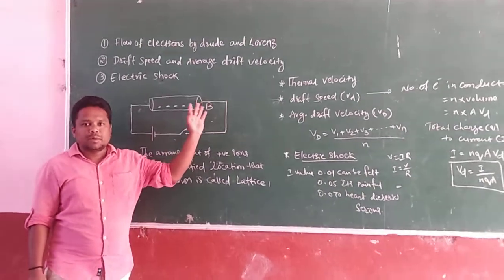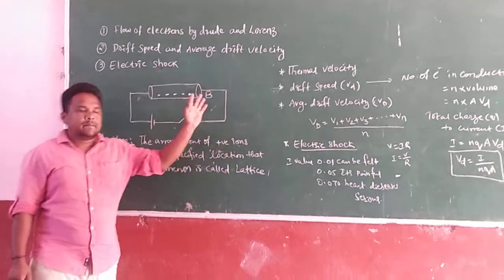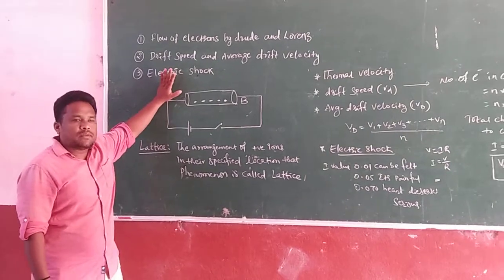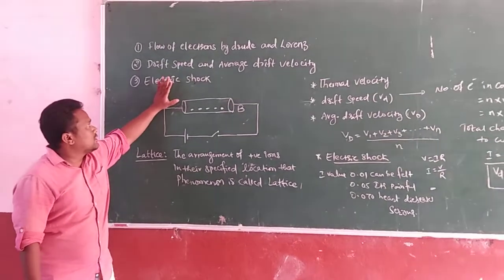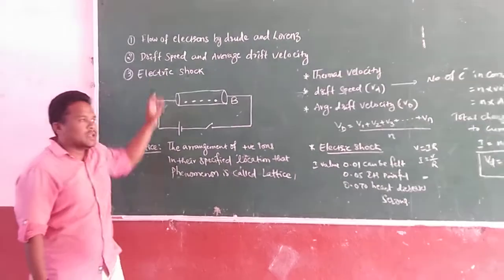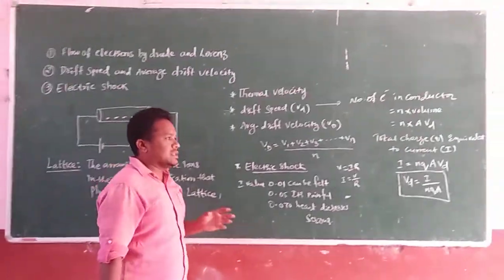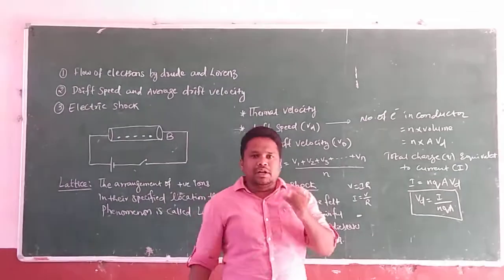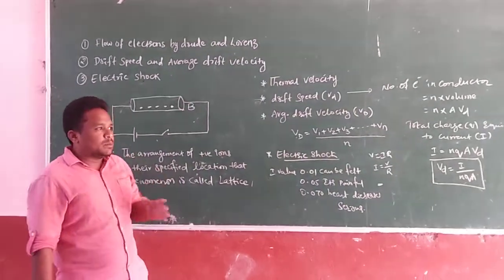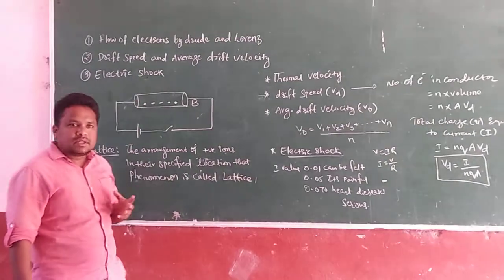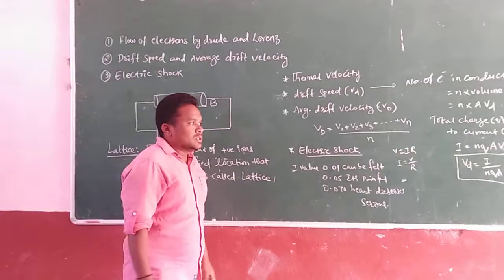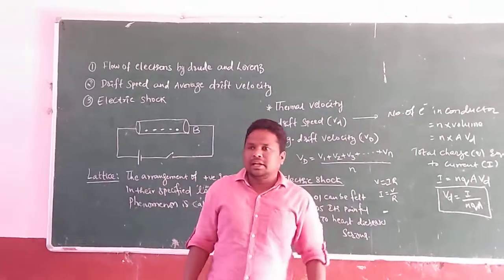Hi students, this is Praveen Kumar. Today I am going to teach about the flow of electrons, drift speed, average drift velocity, and what is electric shock. In the previous class, we already discussed the definitions for electric current, what is the battery, what is the potential, potential difference, and electric potential. Those are the basic fundamentals for electric current.